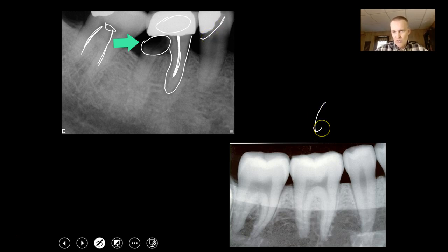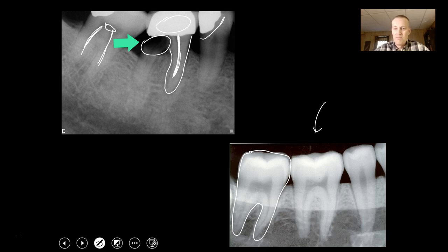This is what normal teeth look like. You can see the whole tooth going into the mandible or maxilla, and this is the pulp cavity back up in here — where the nerves and blood vessels would be that feed the tooth.